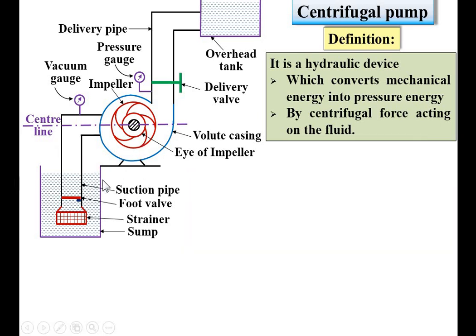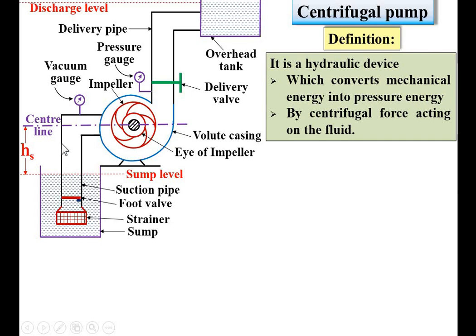We are going to mention some important terminology in this figure. Sump level — the water level in the sump is called the sump level. This is called the discharge level — the level of water in the overhead tank. This is the suction head, which means from the sump level to the center line of the pump, denoted by HS. This one is called the delivery head, denoted by HD. HS plus HD is known as the static head — the total head against which the pump has to work.